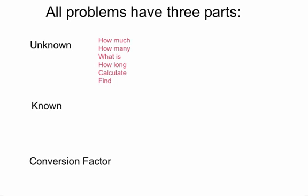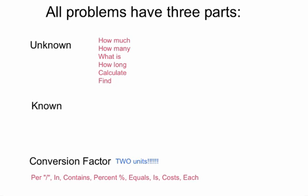The next quantity to focus on are the conversion factors. What are conversion factors? Most importantly, a conversion factor contains two units. Key terms that signal a conversion factor include: per (with the slash sign), in, contains, percent (with the percent sign), equals, is, cost, each. These are examples of key terms for conversion factors.